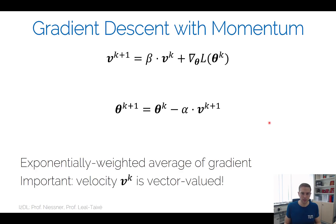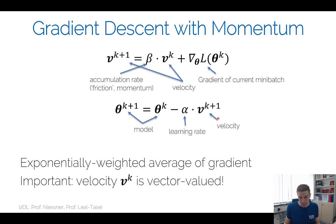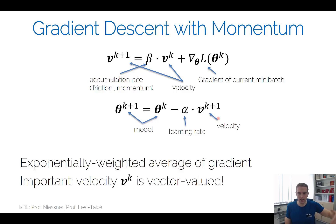Momentum computes an exponentially weighted average of the gradient. We have a velocity value — we take the gradient and accumulate velocity, then do a velocity update. The idea is: if the gradient always points in the same direction, we accelerate in that direction; if it consistently coincides, we go faster in those directions where the gradients agree.